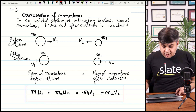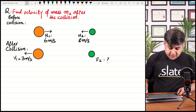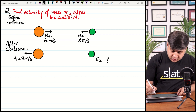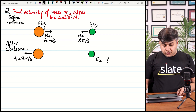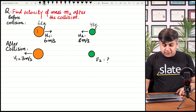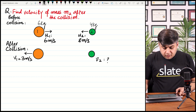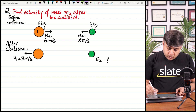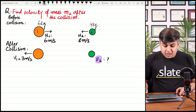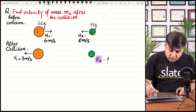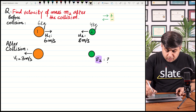We will now move to examples and attempt different questions. Here we have a question on conservation of momentum. You can see there are two masses: mass 1 is 6 kg and mass 2 is 4 kg. The first mass M1 is initially moving with a speed of 6 meters per second, and the 4 kg mass is moving with a speed of 8 meters per second. We have to find the value of velocity V2 of mass M2 after collision. We will apply the law of conservation of momentum. Velocity is a vector quantity, so velocities towards the right will be substituted with a positive sign and velocities towards the left will be substituted with a negative sign.